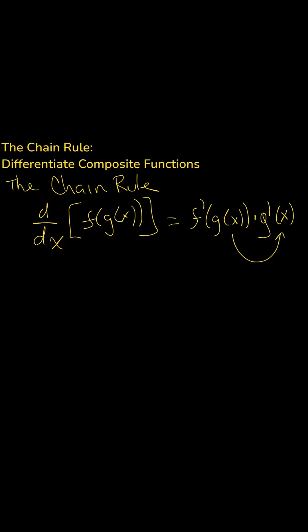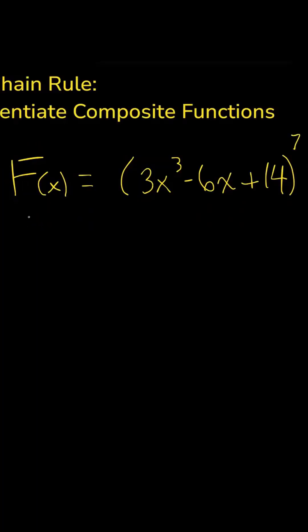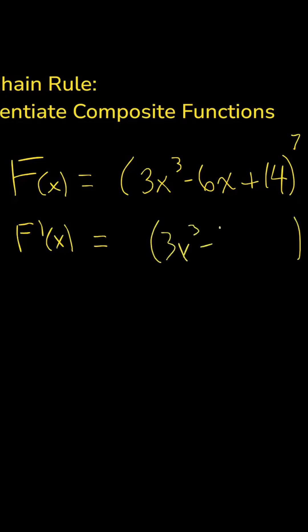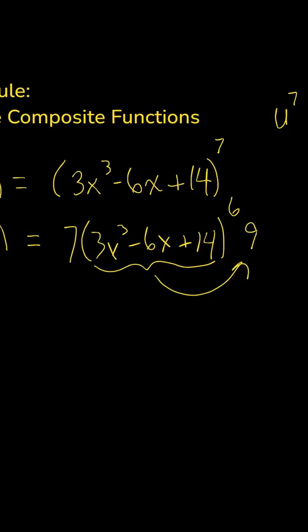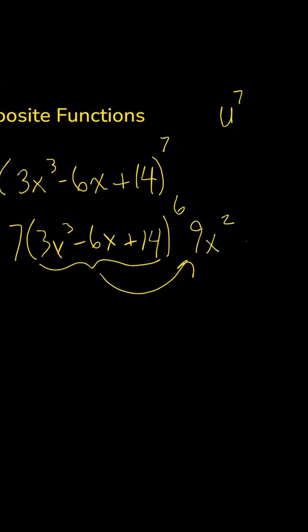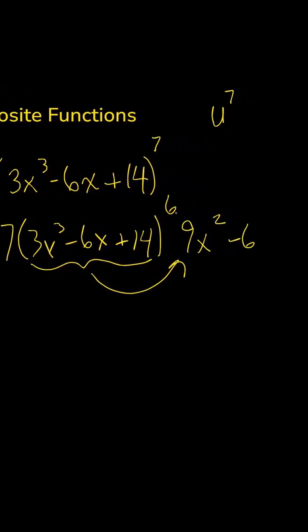Then times the derivative of the inside. If we want to take the derivative of this, I want to use correct notation: capital F prime of x equals — now the inside function is going to stay there — so 3x cubed minus 6x plus 14. The 7 comes down and the new exponent would be 6. Then you multiply by the derivative of the inside, which is 9x squared minus 6. But be careful here, since that's a binomial, you're going to need parentheses.